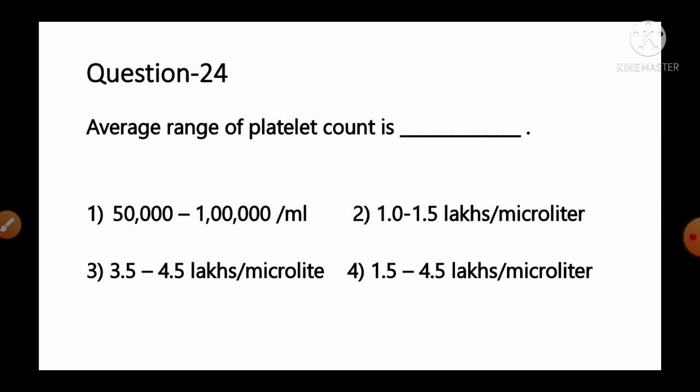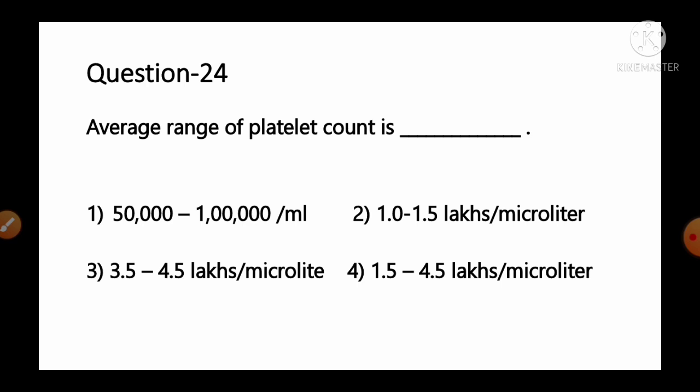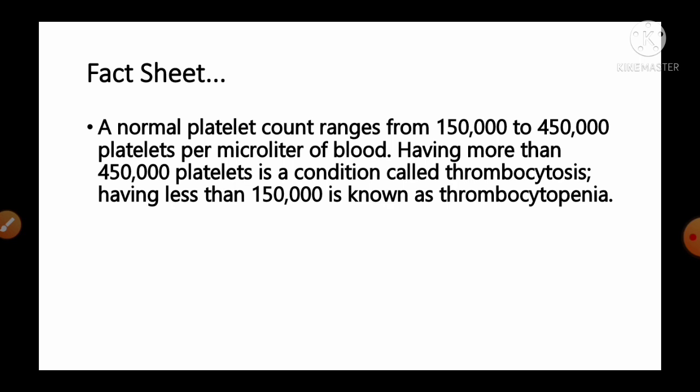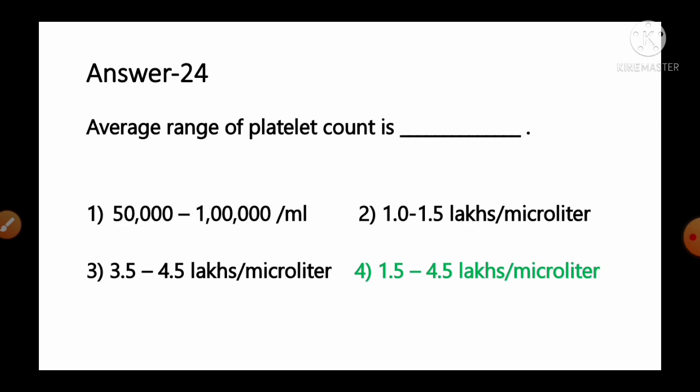Question number 24: Average range of platelet count is — options: 1) 50,000 to 1 lakh per ml, 2) 1.0–1.5 lakhs per µL, 3) 3.5–4.5 lakhs per µL, 4) 1.5–4.5 lakhs per µL. A normal platelet count ranges from 1,50,000 to 4,50,000 (1.5–4.5 lakhs) per microlitre. More than 4,50,000 is thrombocytosis; less than 1,50,000 is thrombocytopenia. So option number 4 is the correct answer.